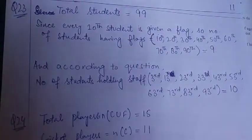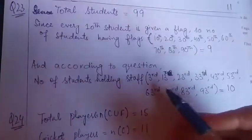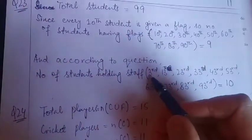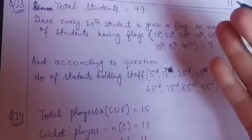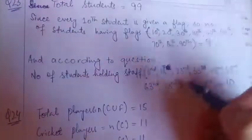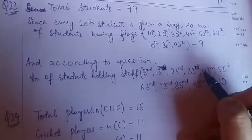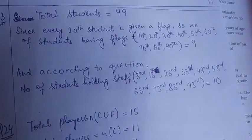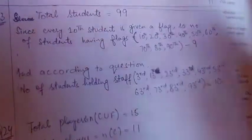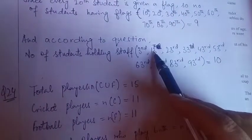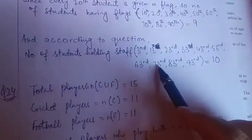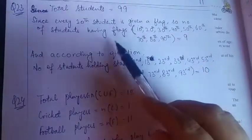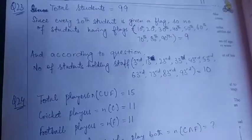And the second thing is staff kiske paas hai? Har matlab first hai third ke paas, matlab third bachche ke paas. So aur uske baad har 10th ke baad. Okay, matlab pehla agar third hoga, toh third ke baad 10th ka badhega. Thirteen, thirteen ke baad ten ka badhega 23, phir 33, 43, 53, 63, 73, 83, 93. We can't go 103 because students are only 99. So just count: 1, 2, 3, 4, 5, 6, 7, 8, 9, 10. Okay, so 9 bachchon ke paas flags hai and 10 bachchon ke paas staff hai.